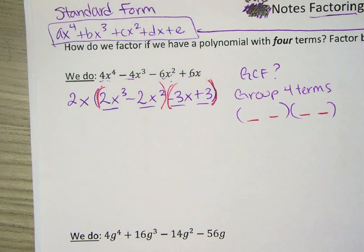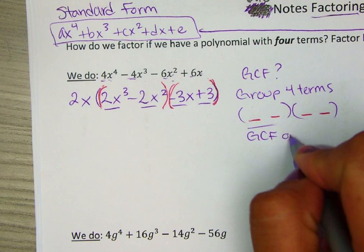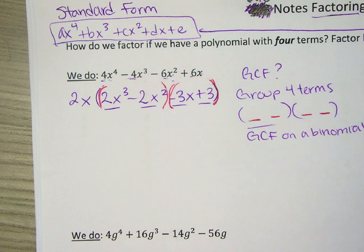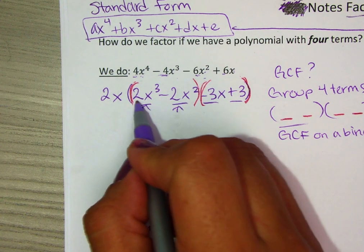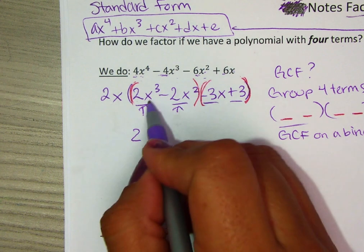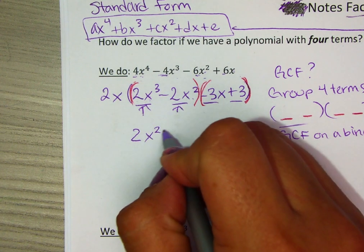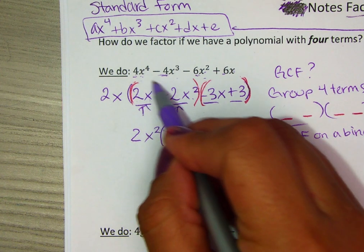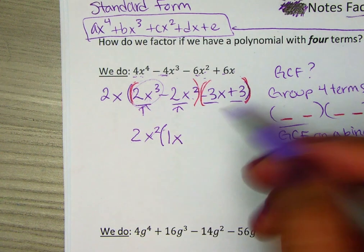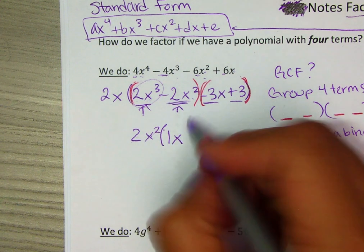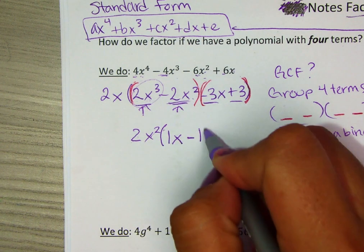Once you turn them into two binomials, you're going to factor out the GCF again for one of the binomials. What does 2x³ and 2x² have in common? They have a 2 in common, and the highest x that you can divide by is x to the 2nd power, because they both have at least 2x's. So I'm going to take it out. You're dividing each term by 2x². So 2 divided by 2 is 1, x³ divided by x² leaves x. The second term, divide by 2 is negative 1, and x² divided by x² leaves nothing.